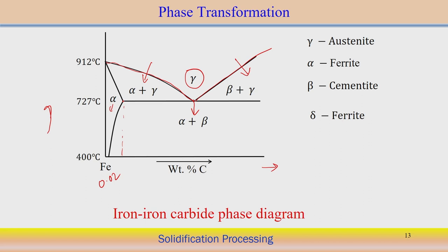There are other phases as well. The pearlite structure is a mixture of alpha plus beta — that is, ferrite plus cementite — and can be observed. The phase diagram tells us what phases are present at what temperature and composition, but it does not tell us how long the transformation from one phase to another takes. The equilibrium condition assumes an infinitely slow process, and from the phase diagram we get information on different phases along with composition and with respect to different temperatures.